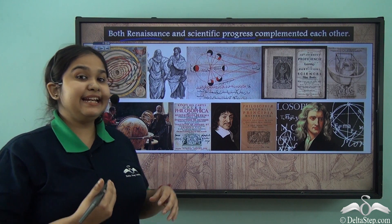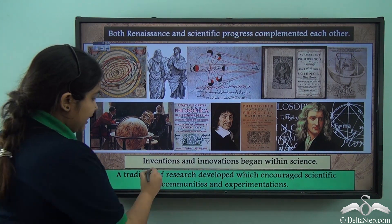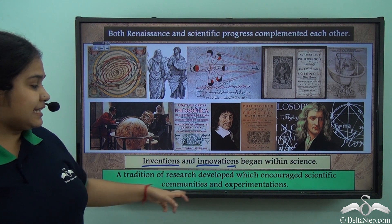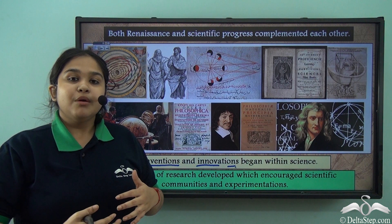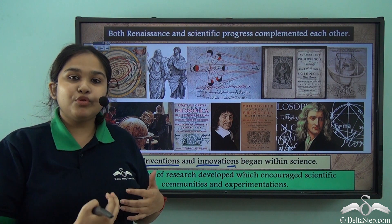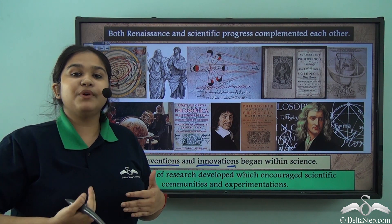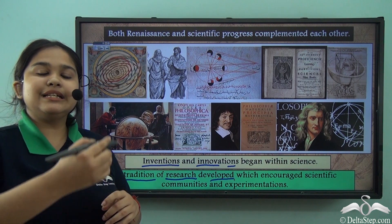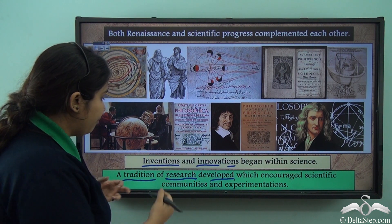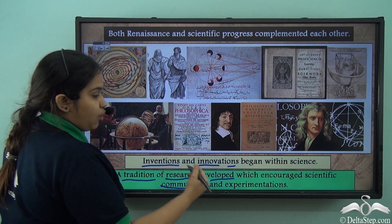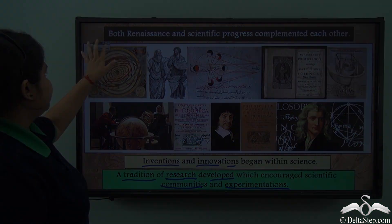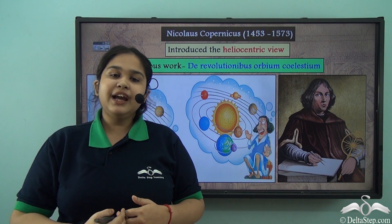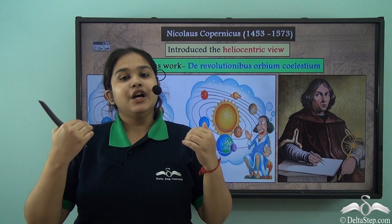This scientific progress led to various inventions and innovations in many fields of science. These inventions and innovations were happening because the individualistic approach had already come into being. People were asking questions, researching, and a tradition of research developed which encouraged like-minded people to come together and form scientific communities based on experimentation. Slowly and steadily, individuals were experimenting, observing, and propagating new scientific thought.